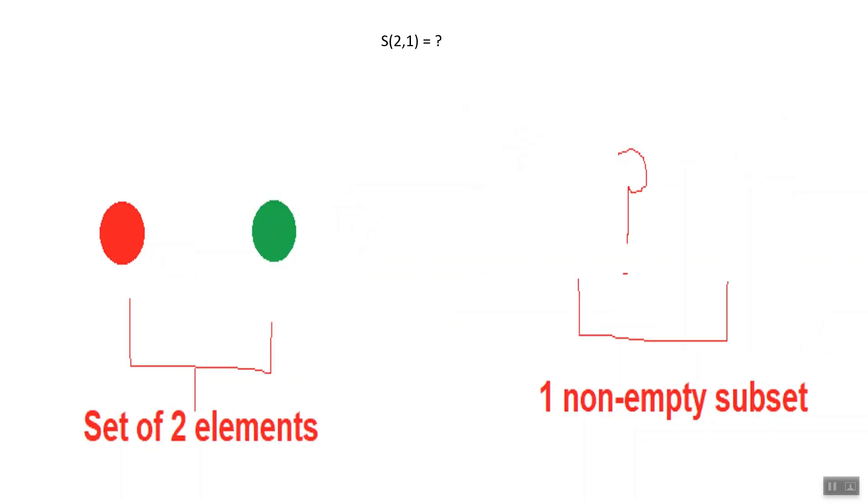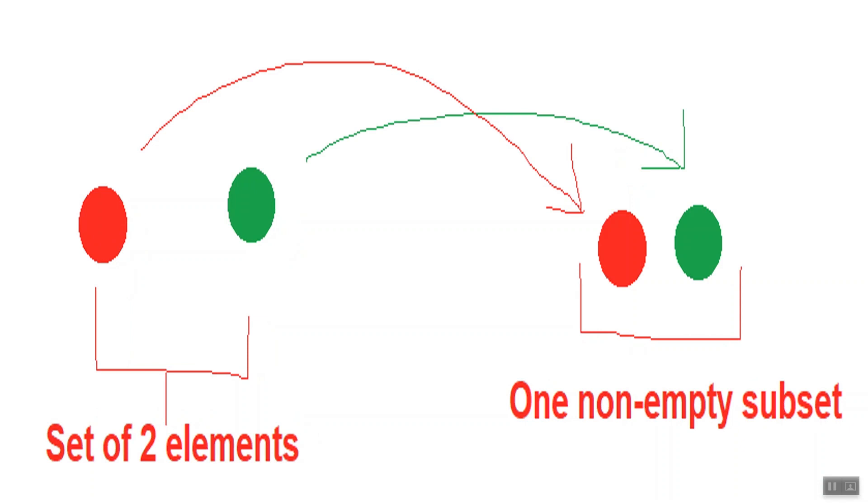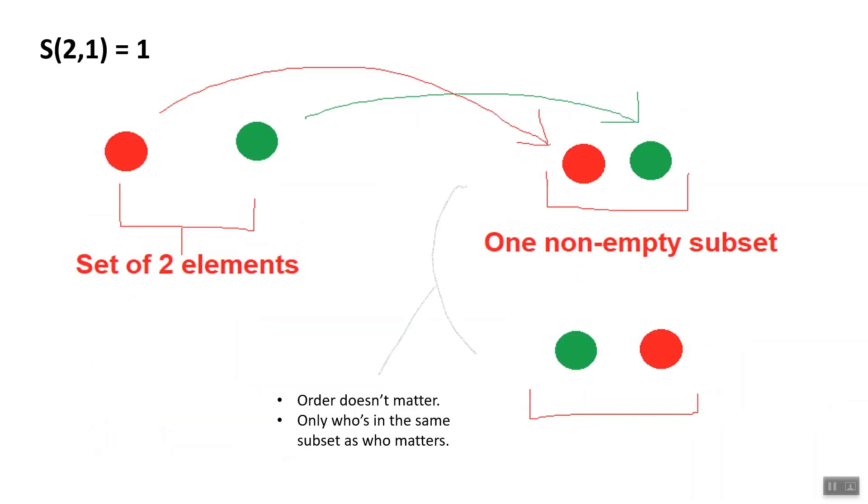Now think about a set of two elements. There's only one way we can distribute these elements into one non-empty subset, which is to include all of our elements in that subset. Remember that the order they appear in does not matter, as we're counting partitions, not permutations.